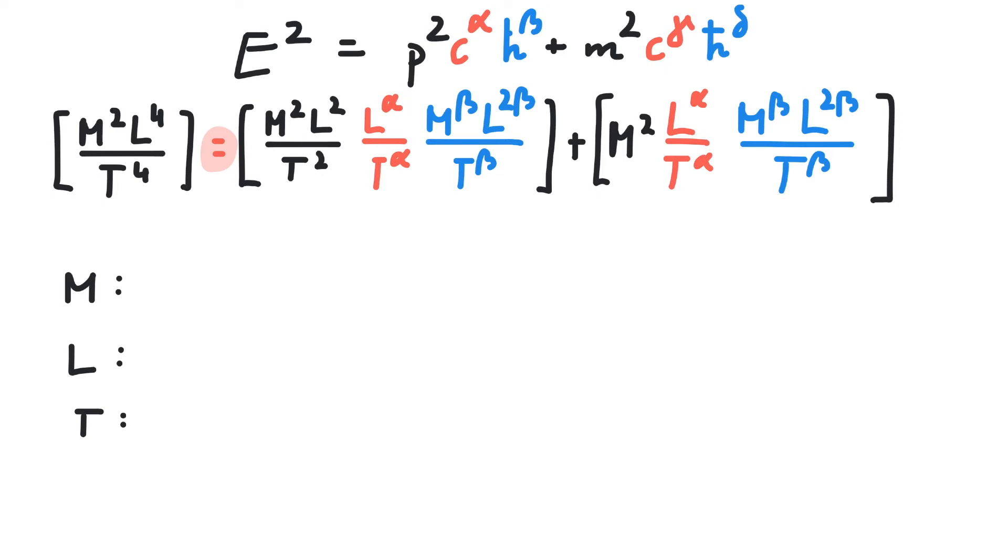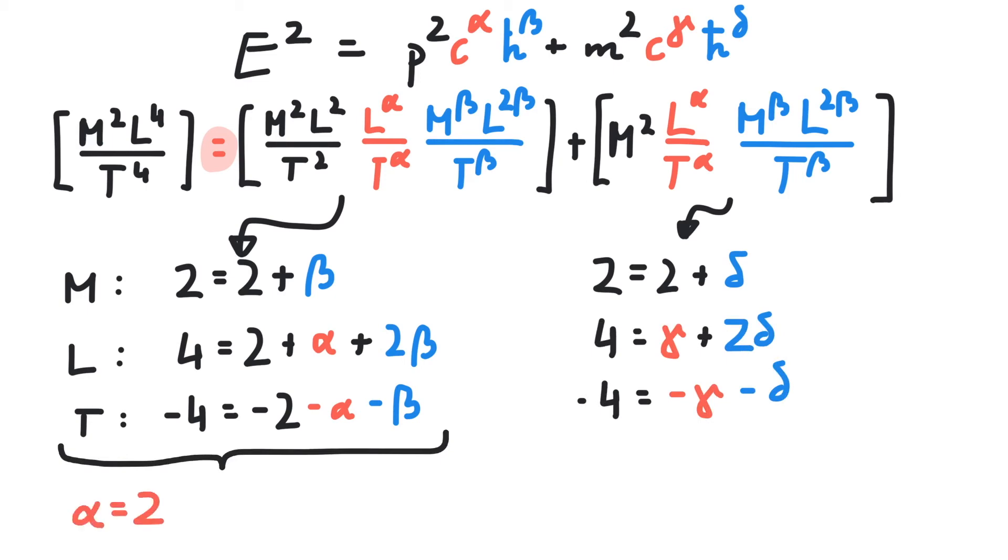We multiply terms here, so that means adding exponents. This yields the following three equations for the first term and these for the second term. After solving these equations, we can restore SI units.